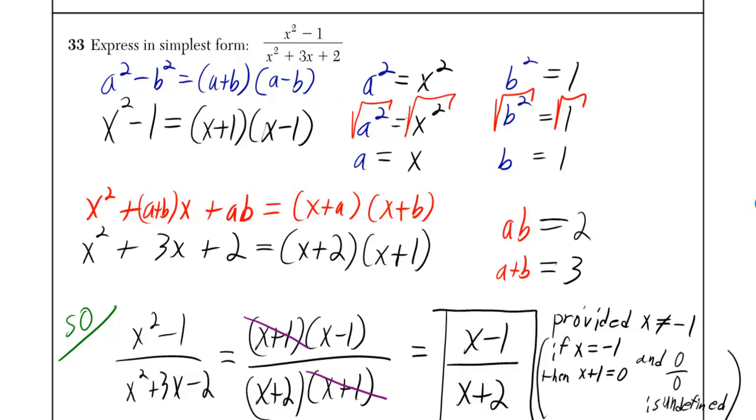Well, if a squared is equal to x squared, you take the square root of each and you find out that a can be x. If b squared is equal to 1, you take the square root of each and you find out that b can be 1. So you just plug in. Wherever you see an a, you put an x. Wherever you see a b, you put a 1.